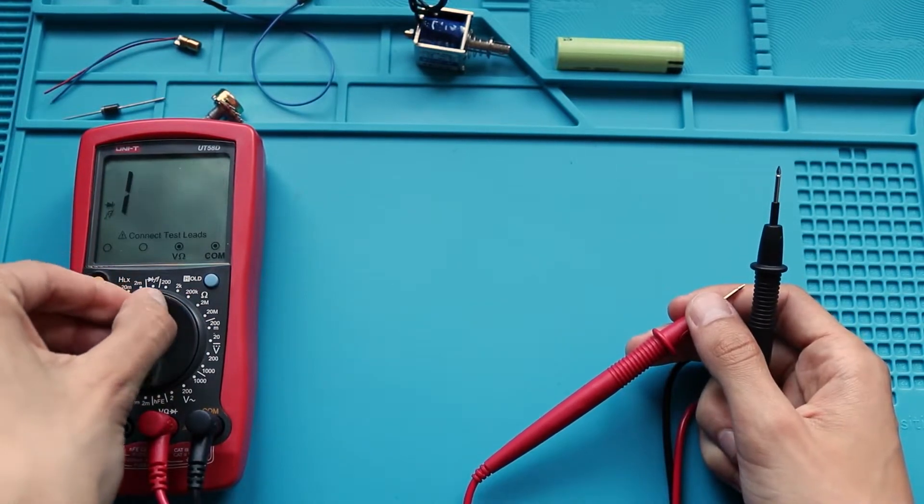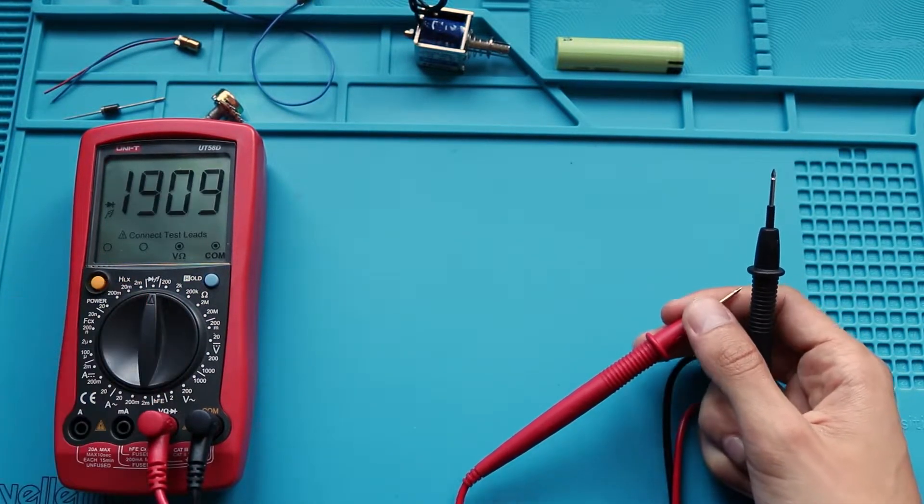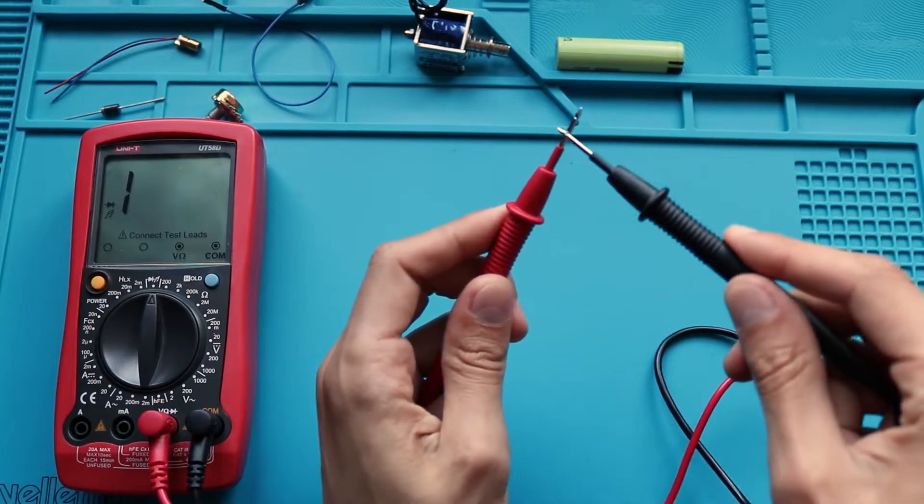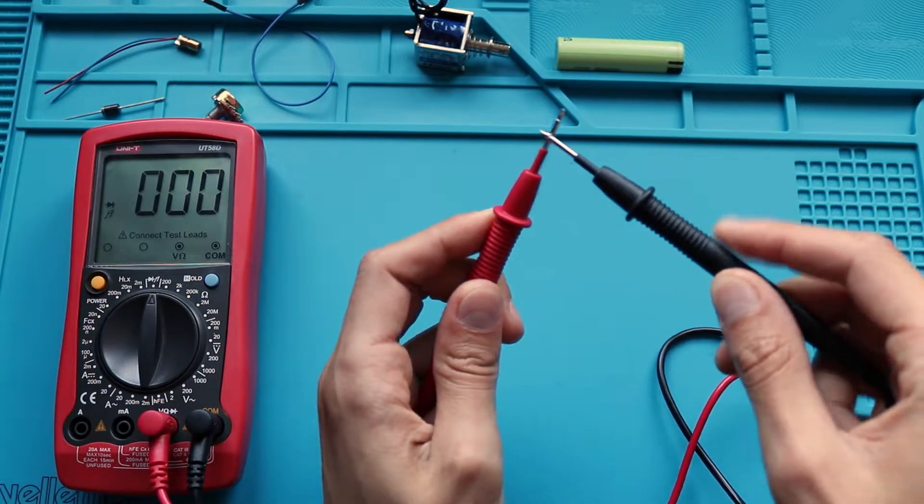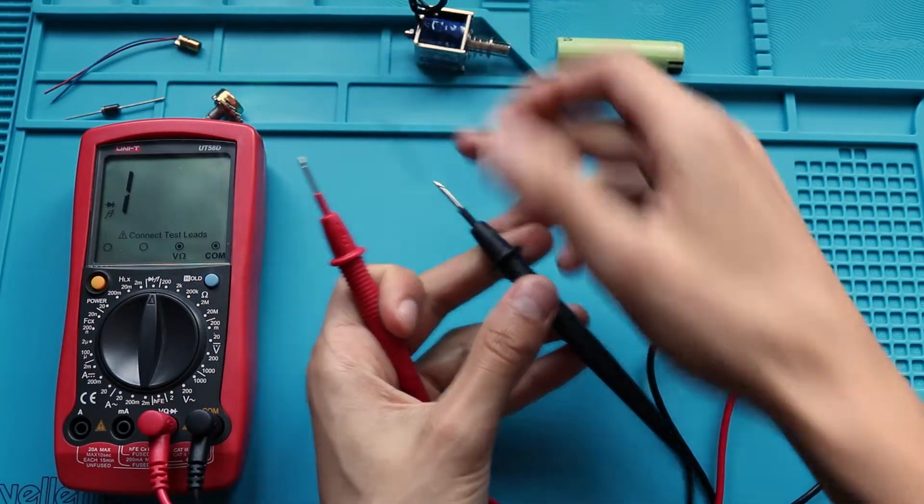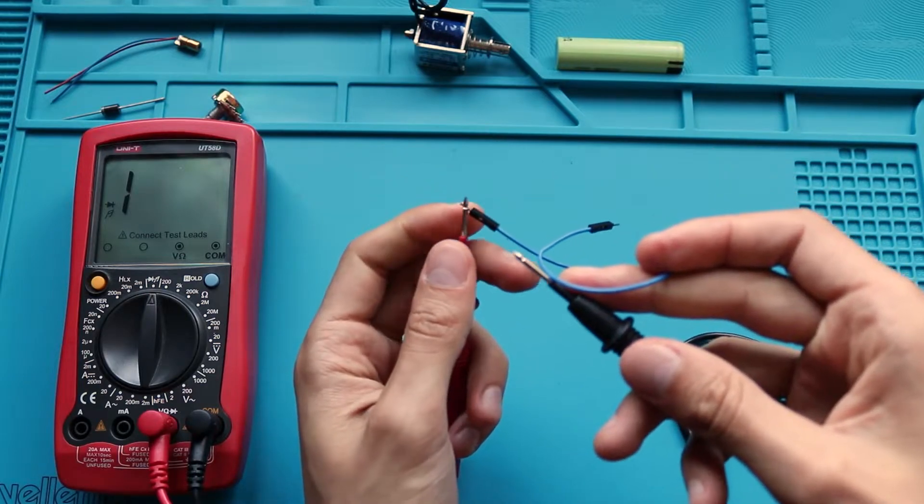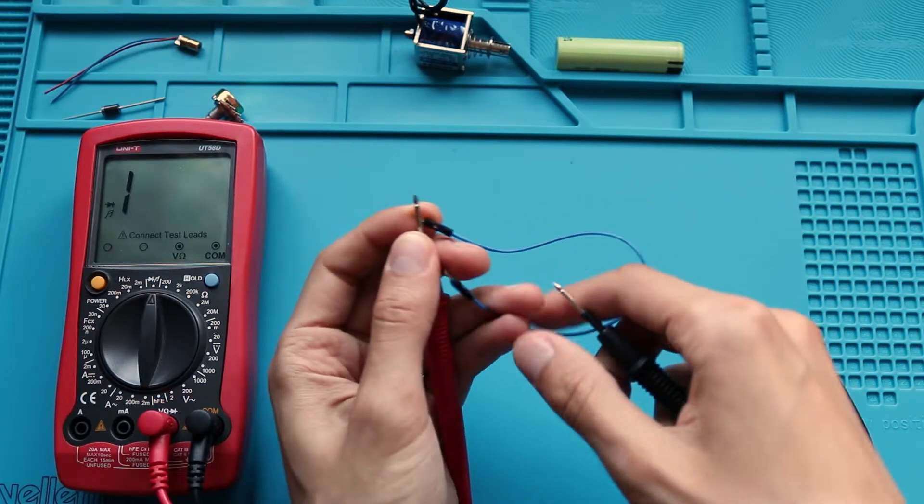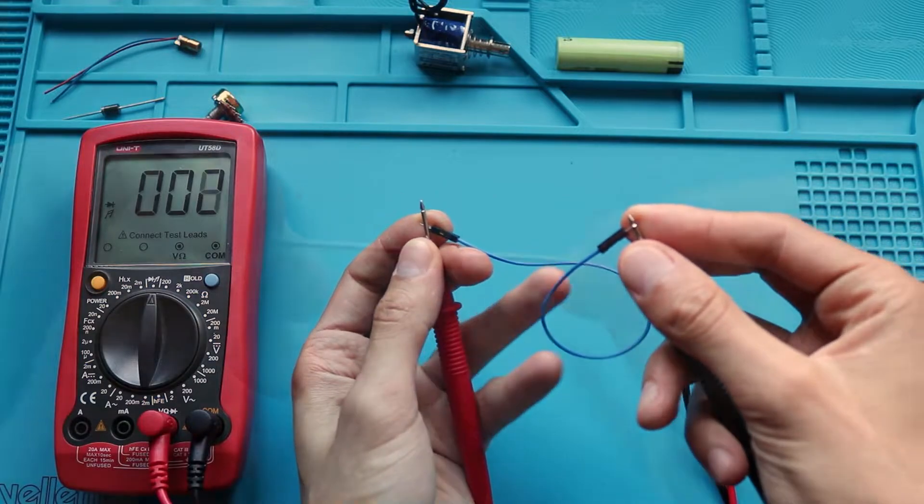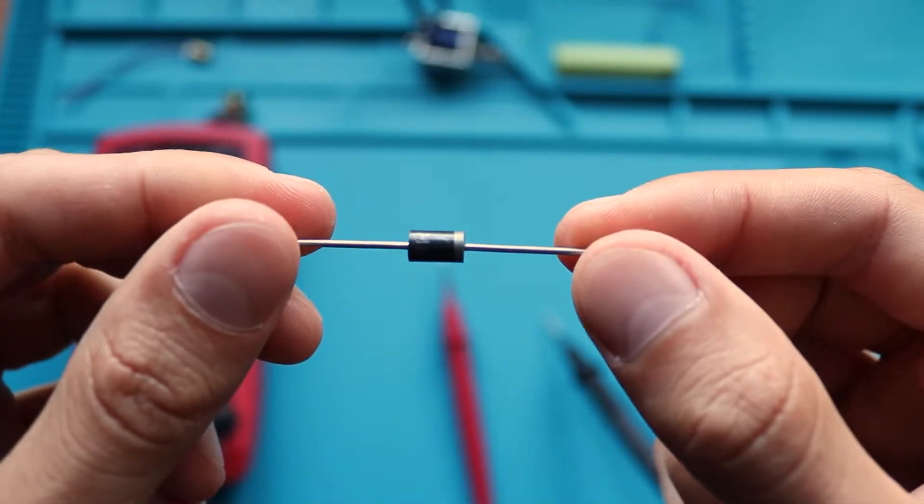Another multimeter function is diode testing. Basically it does the same as resistance measurement, but also beeps when resistance is low. Using this mode you can find common connection points in the circuit as well as you can find short circuits in your scheme. And you can test semiconductor components with it.